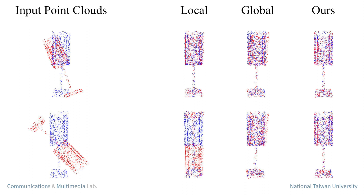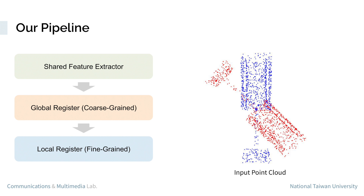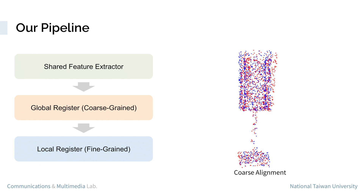Our method includes three core modules. First, a shared feature extractor to generate global and local features. Second, a global register to reduce the transformation between input point clouds.